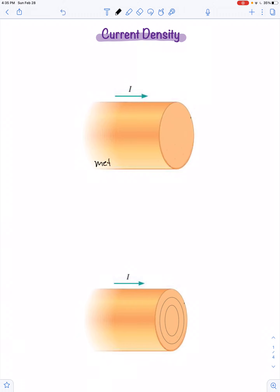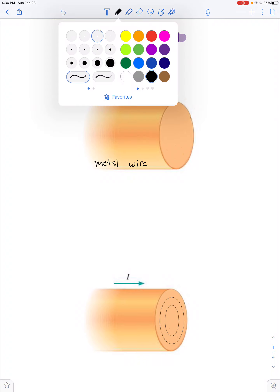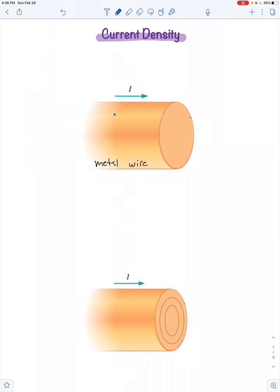Here's a metal wire. Because it's metal, the charge carriers are free electrons, negatively charged particles.